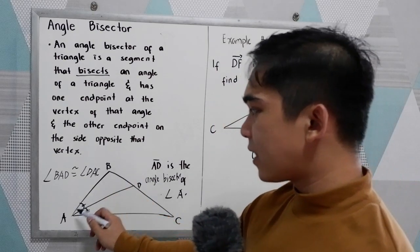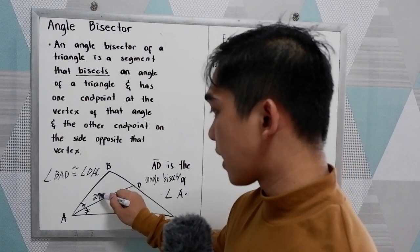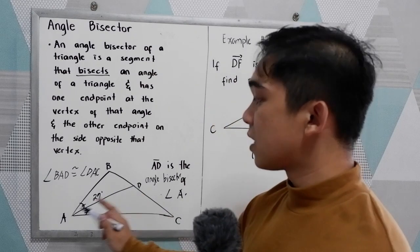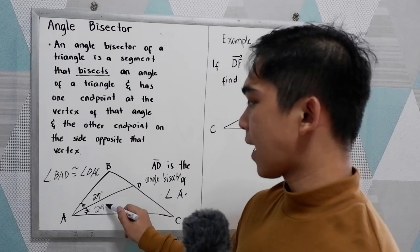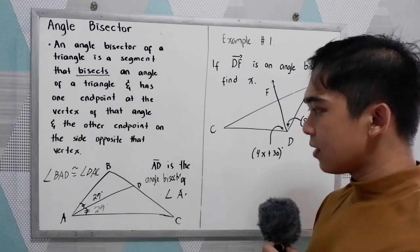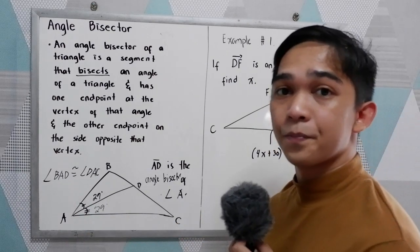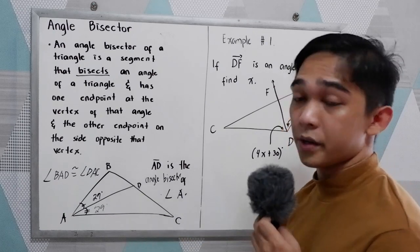So if BAD measures 29 degrees, DAC also measures 29 degrees, because AD bisects angle A. It divides the angle into two equal parts.